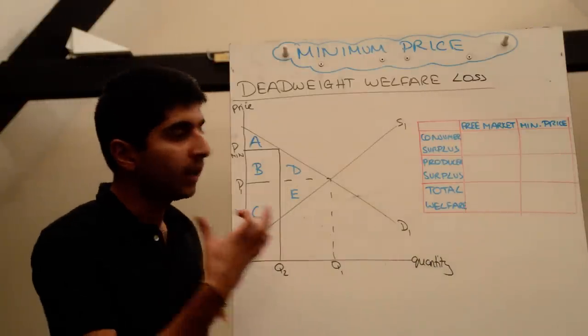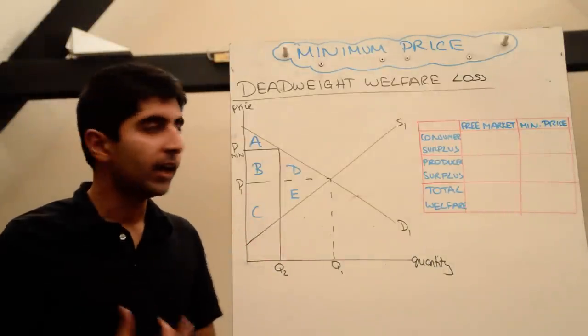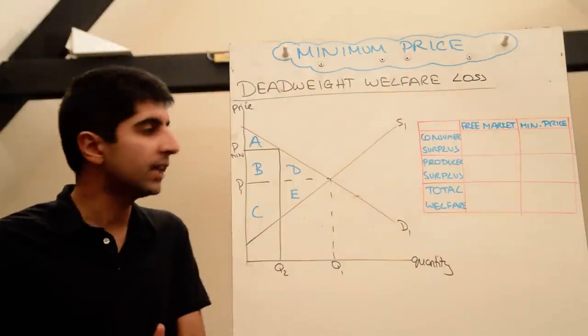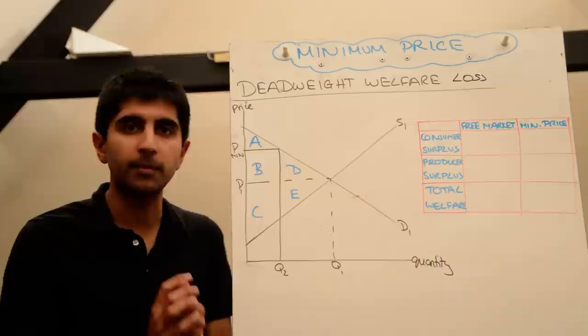What we'll do is compare total welfare in the free market and look at total welfare after a minimum price and we'll see that total welfare actually declines when a minimum price is imposed.